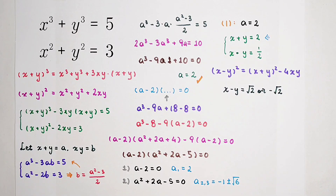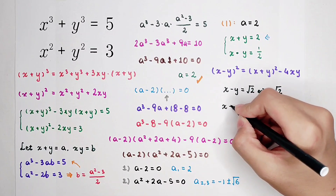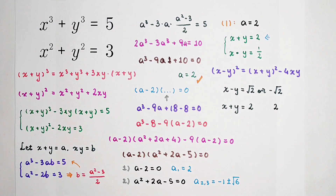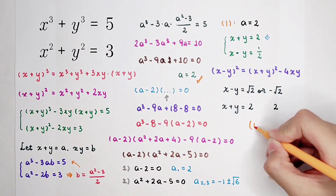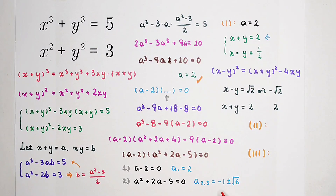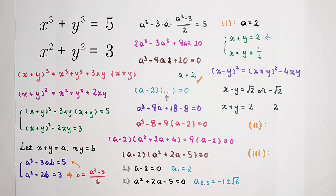For each case — x minus y equals root 2 and x plus y equals 2, then solve for x and y. We also have case two when a equals negative 1 plus square root of 6, and case three when a equals negative 1 minus square root of 6 — solve those yourself. Do you get the method and the trick? Don't forget to give me a thumbs up, subscribe to my channel for more videos, and see you next time. Bye-bye!